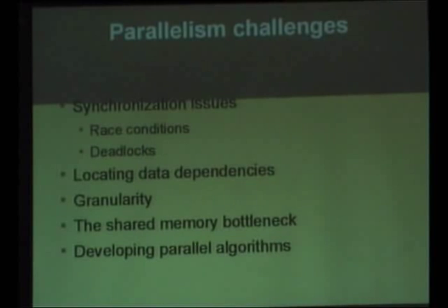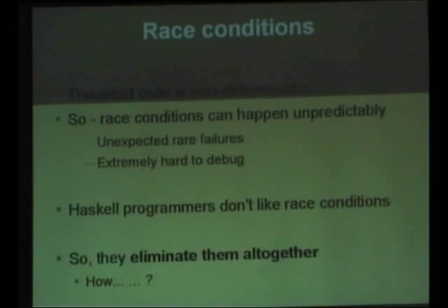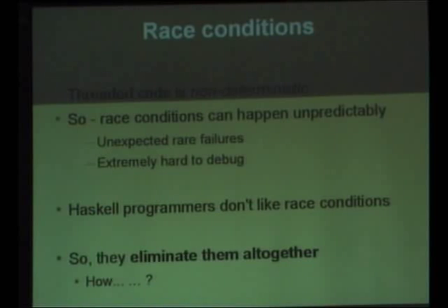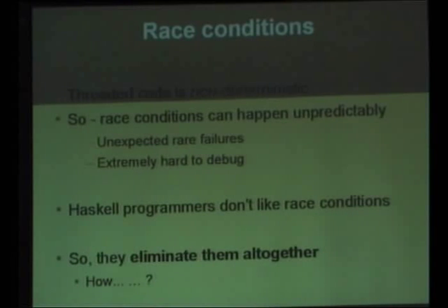What are the challenges of parallelising code? One of the main synchronisation issues that people come across is race conditions. The problem is that if your code is threaded and you have a mutable state and you lock that state with mutexes, then the code becomes non-deterministic. So you get unpredictable race conditions and all these kinds of problems.